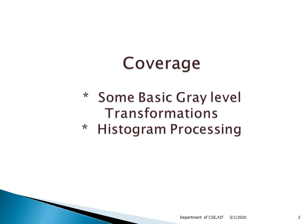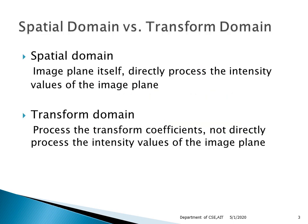In Module 2 we will cover basic gray level transformations and histogram processing. Image processing techniques can be classified as spatial domain or transform domain. In the spatial domain we concentrate on the pixels of an image, operating directly on them, whereas in the frequency domain we operate on the Fourier transform of an image. Spatial domain techniques are generally more efficient because they are computationally fast and require less processing resources.